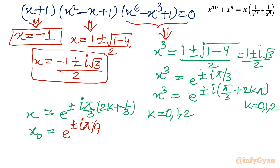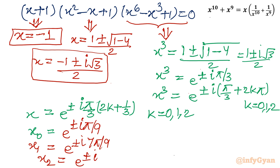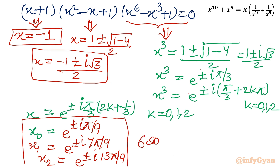This gives 6 complex solutions from the third bracket and 2 complex solutions from the second bracket. So out of 9 solutions from Equation 1, only 1 is real — that is x = -1 — and the remaining 8 are complex. Now let us consider Equation 2.